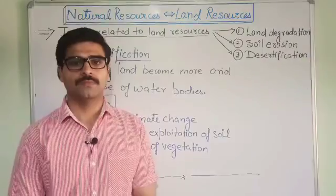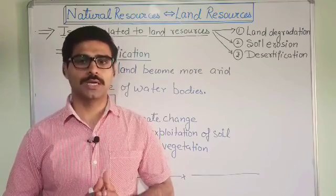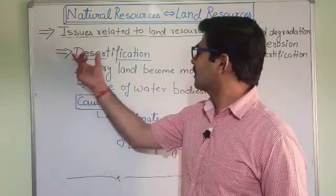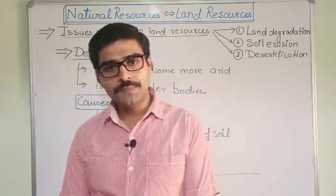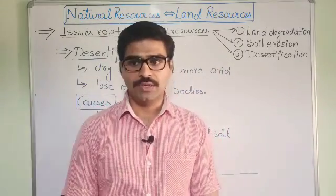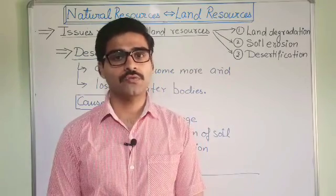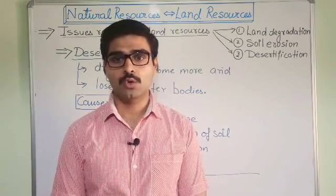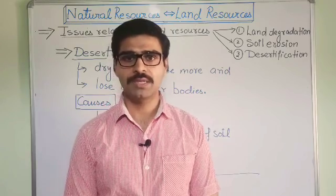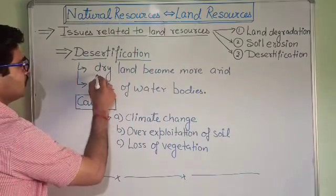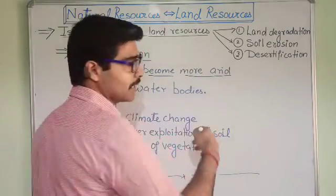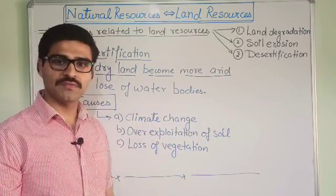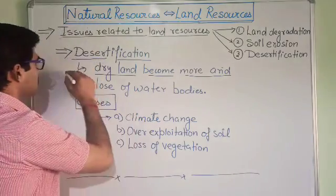Now the next issue related to land resources is desertification. Desertification is a type of land degradation in which a relatively dry area of land becomes increasingly more arid, and there is permanent loss of water bodies. So desertification means dry land becomes more arid due to loss of vegetation and water bodies, due to drought, and due to deficiency of rainfall.